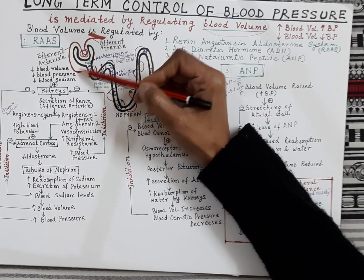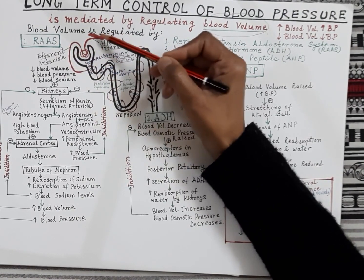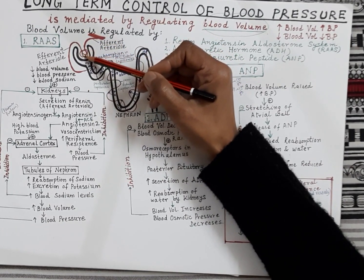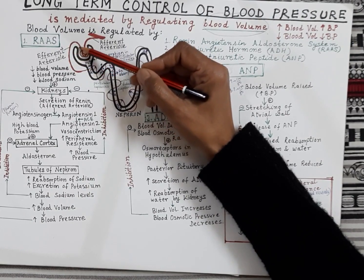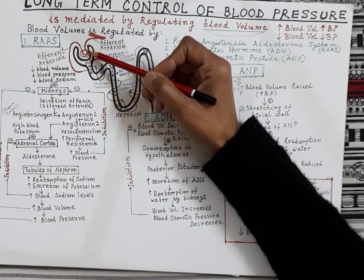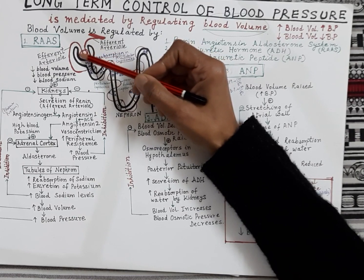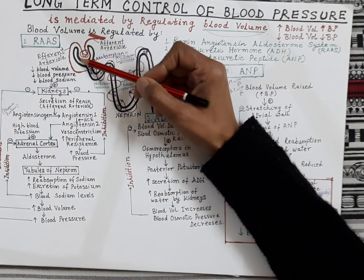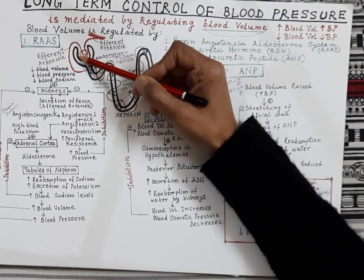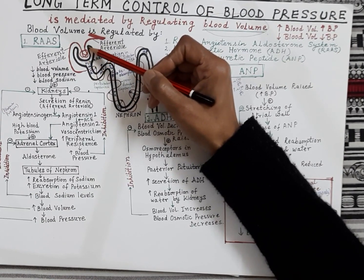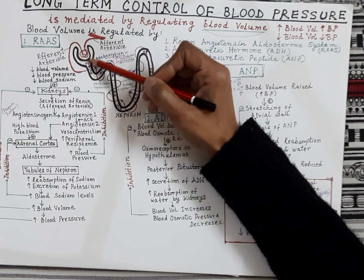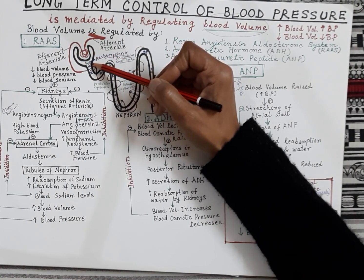The arteriole that exits the nephron is termed the efferent arteriole. The capillaries of the afferent arteriole form the glomerulus, which is the first part of the nephron surrounded by the Bowman's capsule. The blood present in the glomerulus is filtered through the Bowman's capsule — this is the main function of the kidney. Both kidneys together produce about 180 liters of filtrate per day.